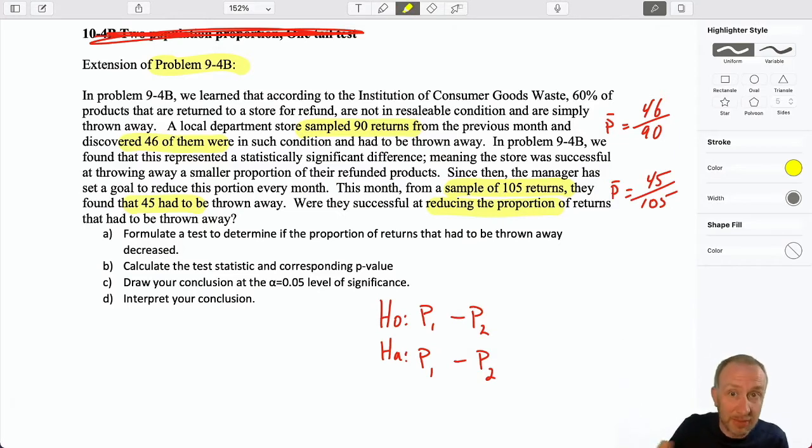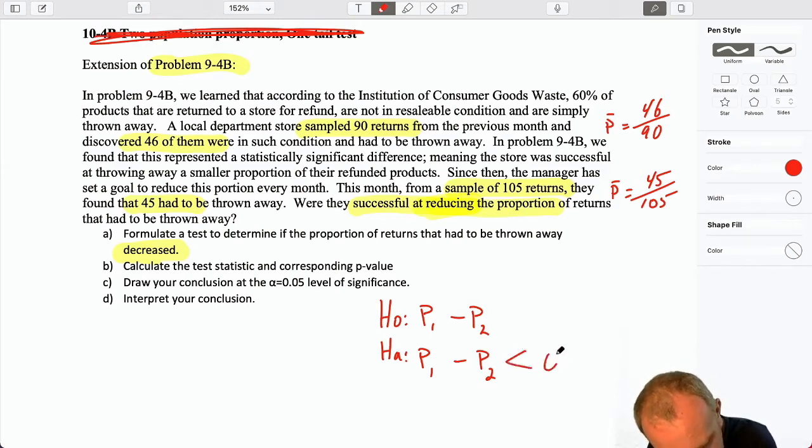I haven't defined them yet. I'm just putting down P1, P2. We'll define those pretty soon. What kind of test should we do? The test is reliant on how we define our terms. Absolutely. But when I read this problem, and I see that we're testing to see if they're successful at, here I see this word reducing, getting smaller. Had the proportion of returns had to be thrown away? Has it decreased? It's getting smaller. When I see words like that, to me, it sounds like a lower tail test. I want to see if something is getting smaller. So I would want to set this up as a lower tail test, based on the wording.